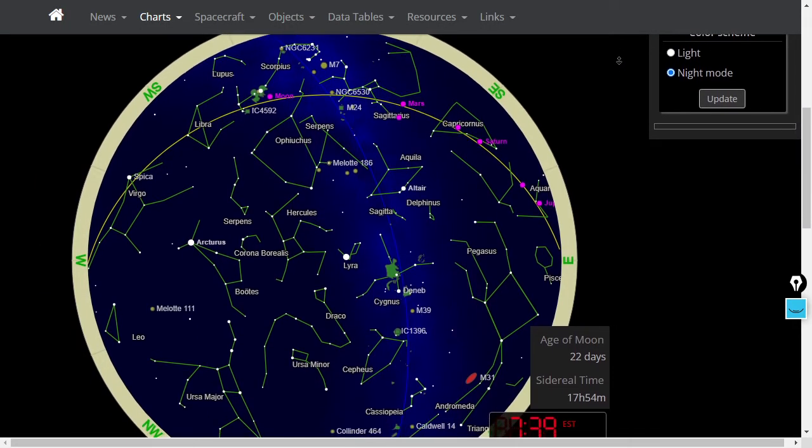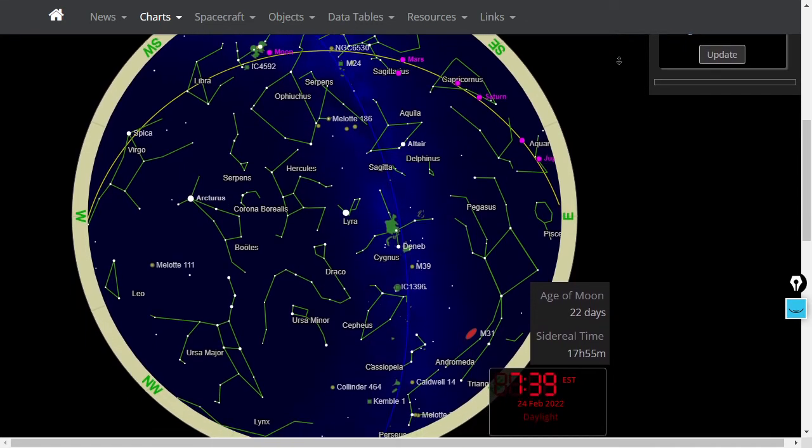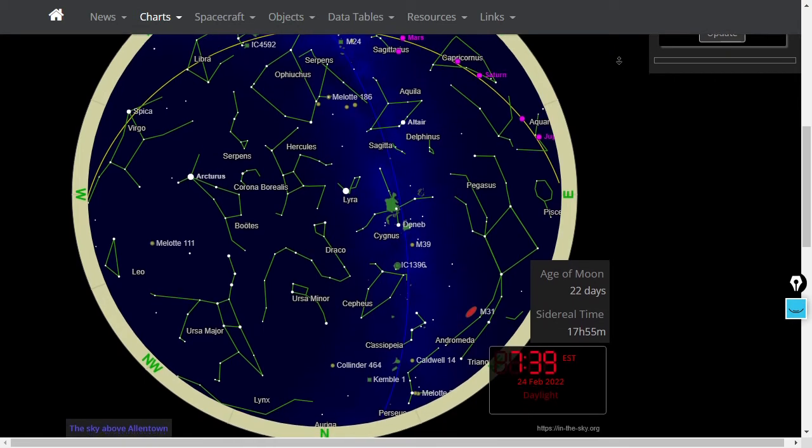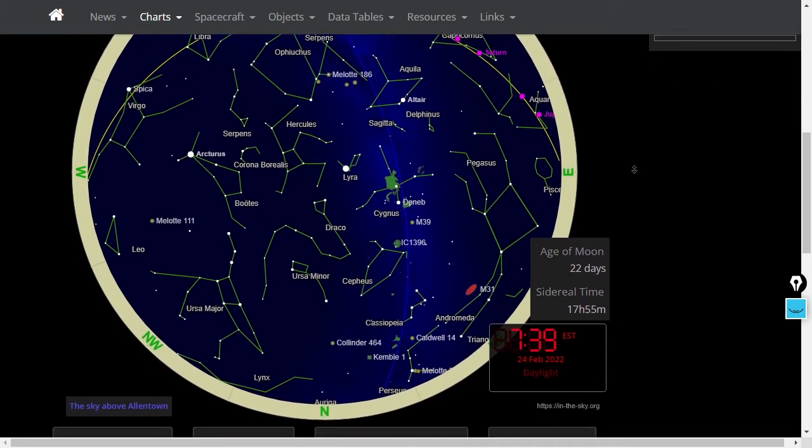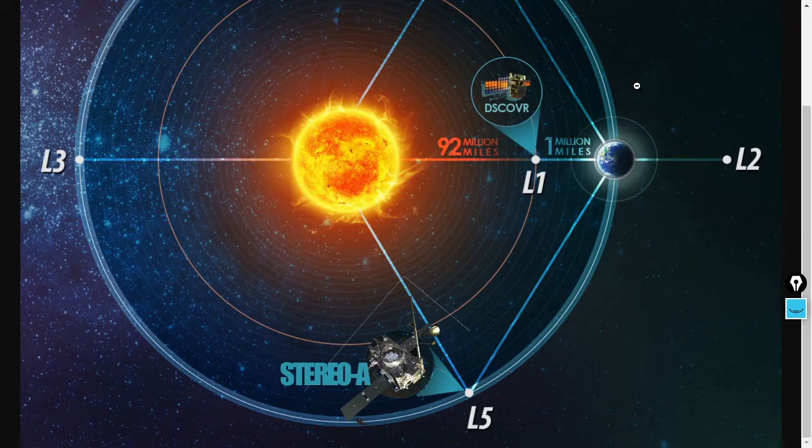Next, a star chart. The planetary pile-up in the morning continues. If you're up before dawn, you may see Mars and Venus and Mercury and Saturn all rising ahead of the sun. That's from in-the-sky.org, and if you're wondering where we're located, it's in Lehigh Valley, Pennsylvania.